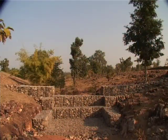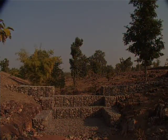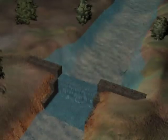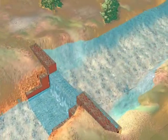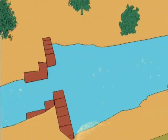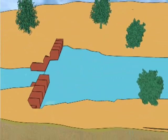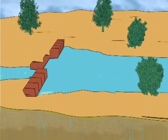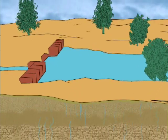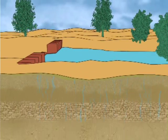The main aim of constructing gabions is to slow down the water rushing through the stream. This helps increase the duration of stream flow and recharges groundwater.